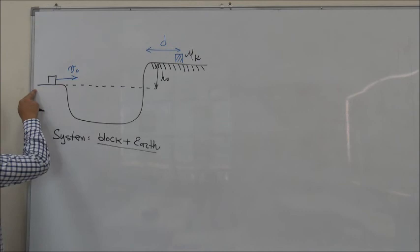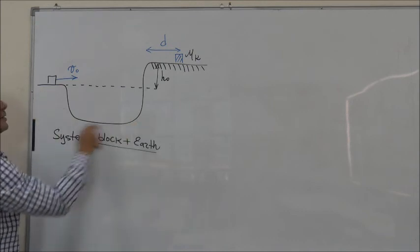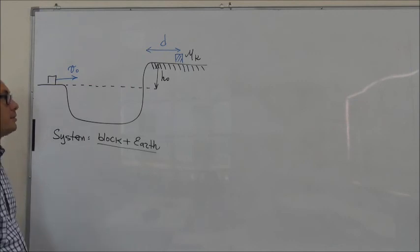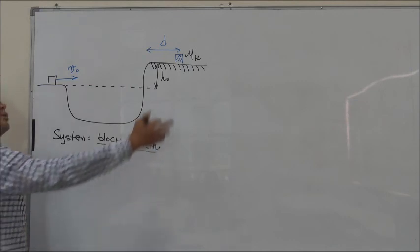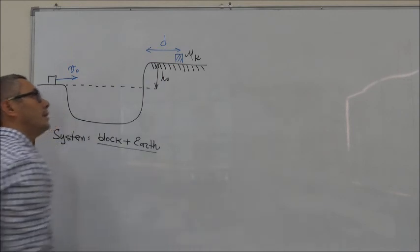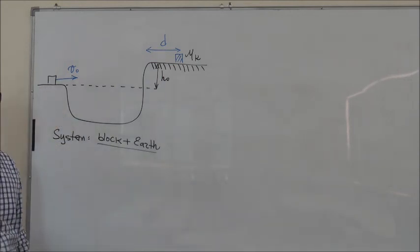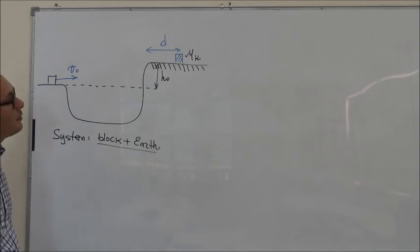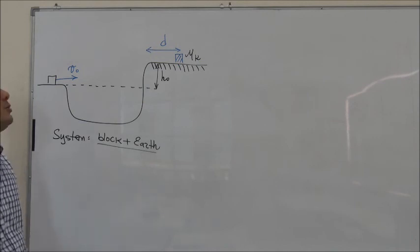When the block is moving on a frictionless surface, the system is isolated because there are no external forces acting on it. But once the block gets here, the system becomes non-isolated because there is a friction force acting on it which is not part of the system. The friction force becomes external to it.